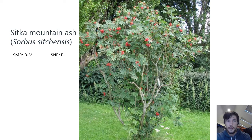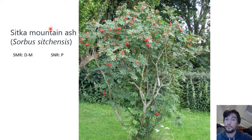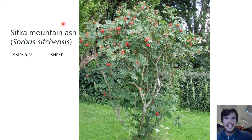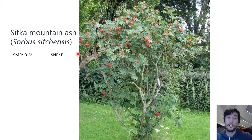Our next boozy berry is Sitka mountain ash, Sorbus sitchensis. The mountain ashes — another name for this genus is rowan trees. You'll see rowan trees mentioned in lots of old medieval literature because this was a really significant tree in Celtic mythology, paganism, and folklore. It was thought to be really magical; fairies would hang out beneath the rowans and all kinds of things like that. Really interesting tree in that regard.